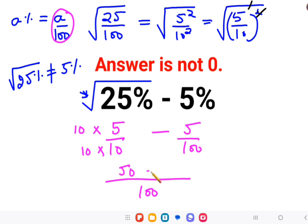50 minus, here the denominator is already 100. So I don't need to convert it into anything. So this is minus 5. So here this comes out to be 45 upon 100.